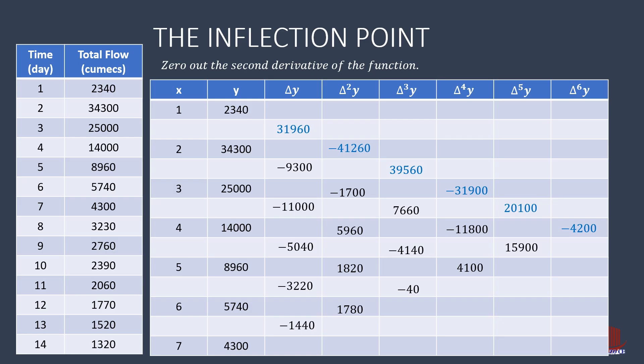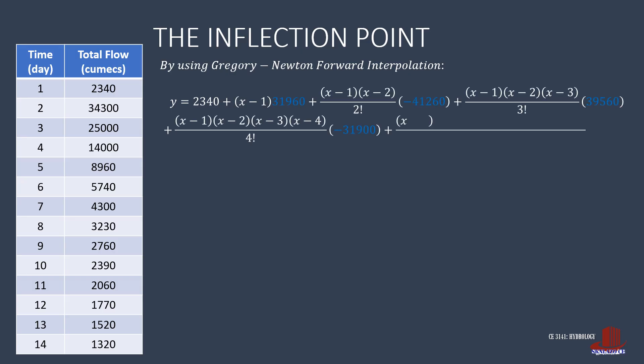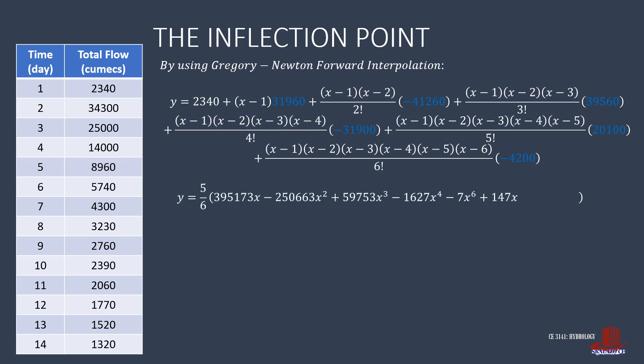With these values, what we are going to use in the best fit curve function are the forward differences, or the top values on each column. They are the ones in blue. There is a function for Gregory Newton forward interpolation. But reviewing numerical solutions, you can also use Gregory Newton backward interpolation. Having 7 data points, the function is a little long, but this is simplified as 5/6 of 395,173x less 250,663x squared plus 59,753x cubed minus 1,627x raised to 4 minus 7x raised to 6 plus 147x raised to 5 minus 199,968.